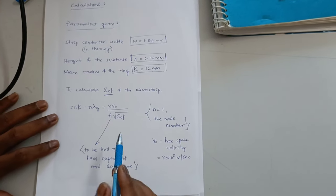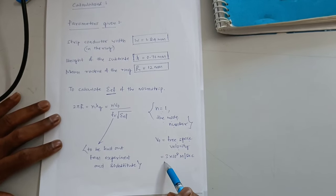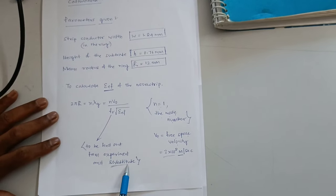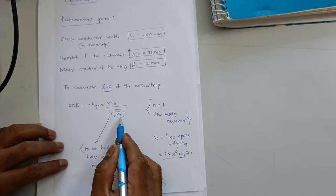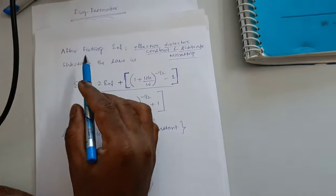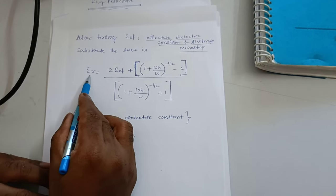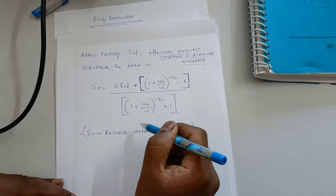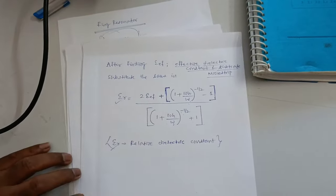Here, it is the formula for this. Ready formulas are there. Here, N is equal to 1. The mode number. And V0 is called free space velocity. You know that 3 into 10 raise to 8 meter per second. Here we have to find. Substitute the value of FR. To be find out from experiment and substitute. Already, we have find out. That is 2.47. It has come. And we have to calculate the effective dielectric constant. Once you find out effective dielectric constant, the next formula you have to go there is. After finding effective dielectric constant of substrate microstrip, substitute the same in this formula. Epsilon R relative dielectric constant is equal to 2 into effective dielectric constant plus 1 plus 10H by W to the power minus half minus 1 divided by 1 plus 10H by W to the power minus half plus 1. So finally you are finding out this relative dielectric constant. So that is what the experiment.